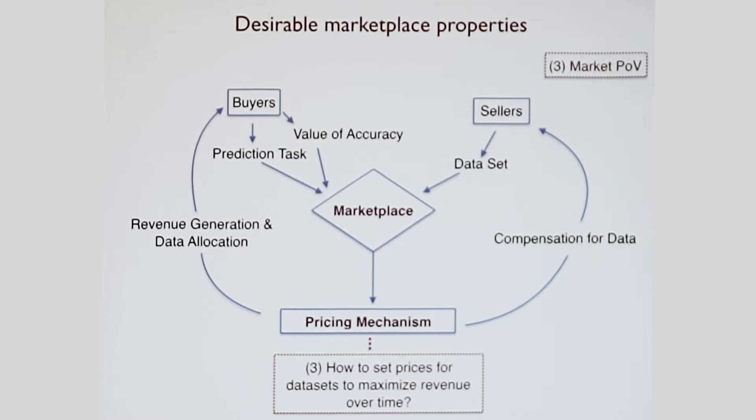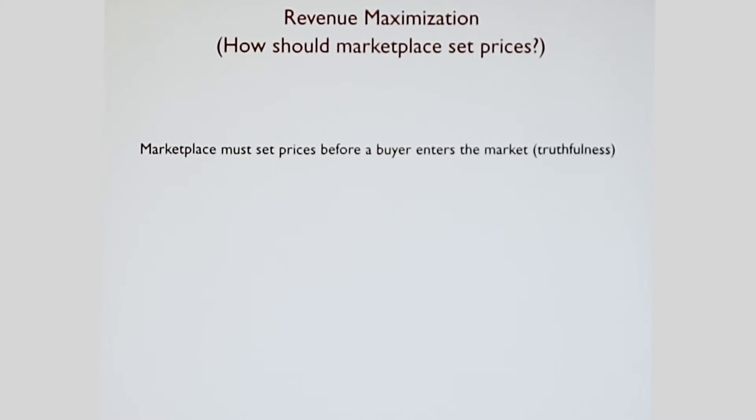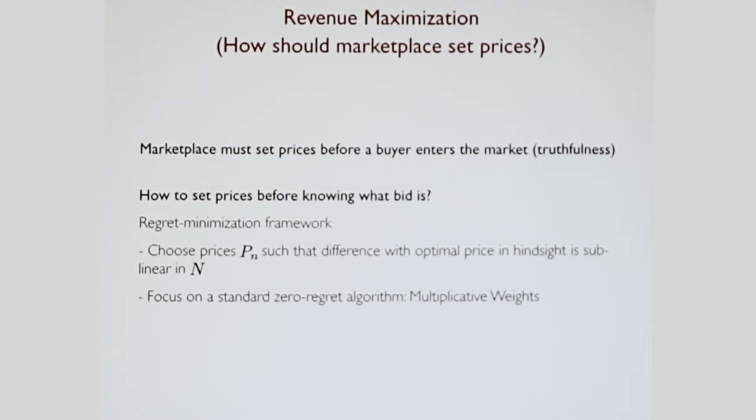We're done with the buyer's point of view, the seller's point of view. I'll finish off in the last few minutes with how you should set prices for these data sets to maximize revenue over time from the market's point of view. The market must set prices before the buyer enters the market to ensure truthfulness. It's a necessary condition. How do you set prices before knowing what the bid is? You can apply a very standard regret minimization framework. For those of you who don't know it, it's essentially you choose a price such that the difference of the optimal price is going to be sublinear in N, where N is the number of buyers that are coming one at a time. We're going to focus on a standard zero-regret algorithm called multiplicative weights, because you don't want to make prior distributions of what kinds of people are coming into this market.